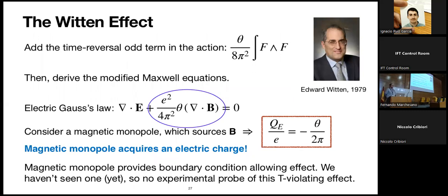But Edward Witten taught us that's not true. He derived that in the presence of such a theta term there is an important physical effect. If you have a particle that sources B, you can derive the modified Maxwell equations in the presence of this new term and find that a source of B in the presence of theta sources E. That means a magnetic monopole acquires an electric charge proportional to theta. So there's this parameter theta in QED — it may be a large CP-violating parameter, but we don't know because we don't have magnetic monopoles to measure it.